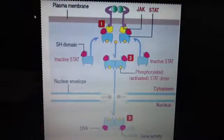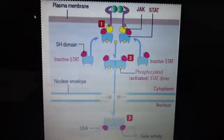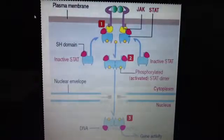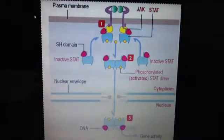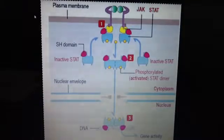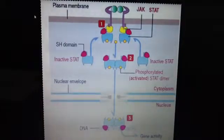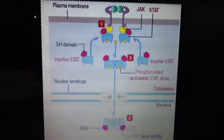In mammals there are seven STAT genes, and each one binds to a different DNA sequence. STAT binds to a DNA sequence called a promoter, which controls the expression of other DNA sequences. This affects basic cell functions like cell growth, differentiation, and death.